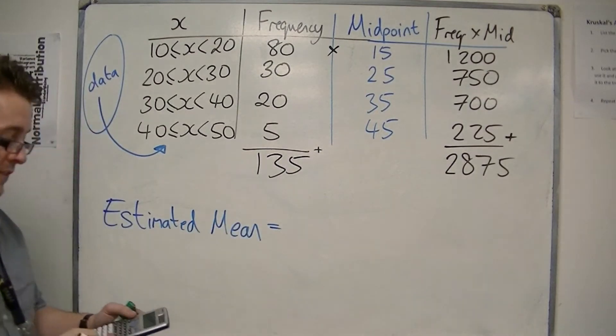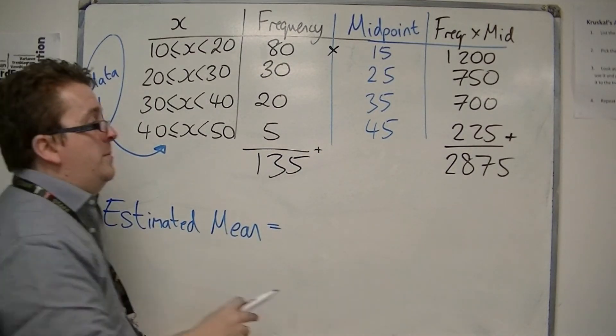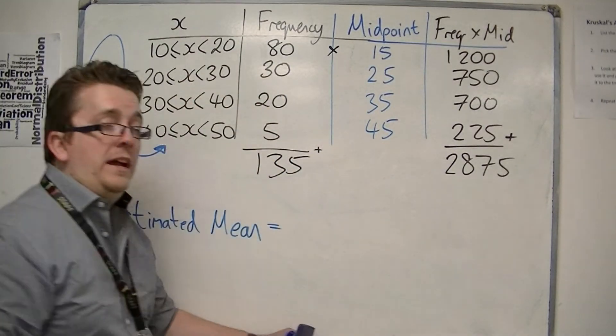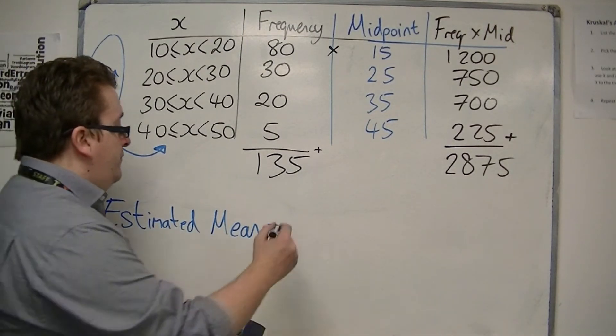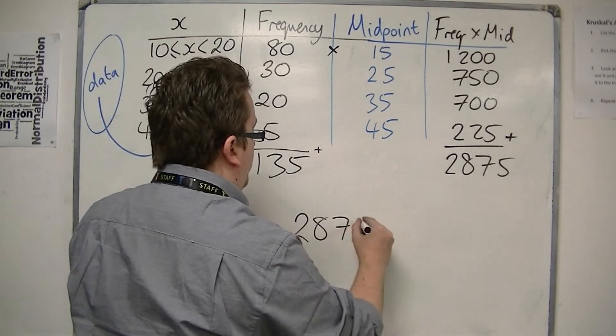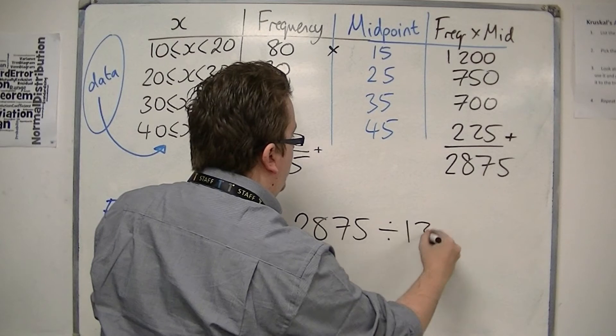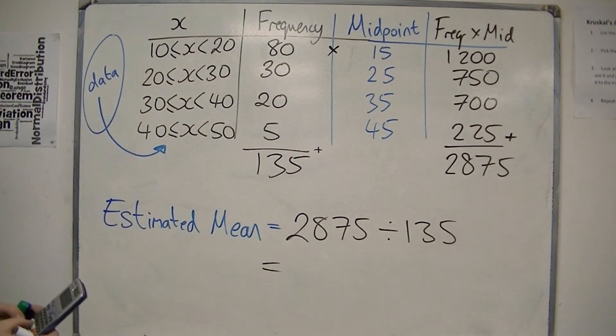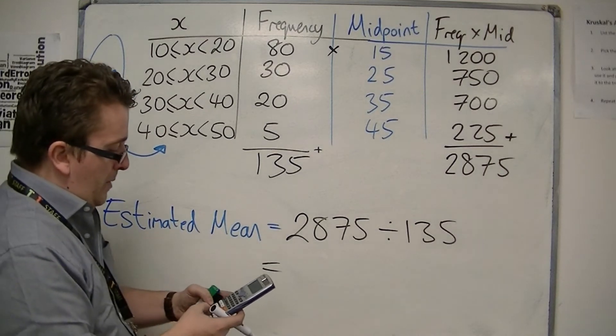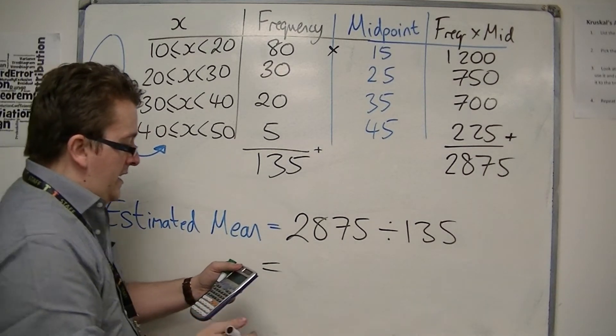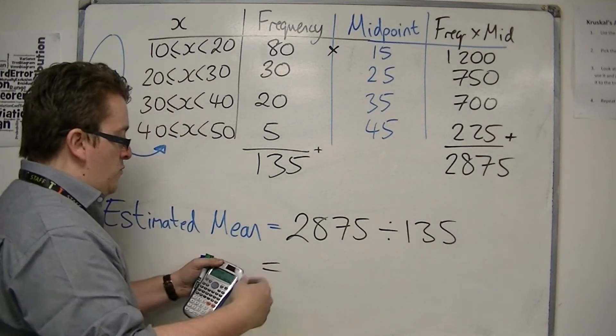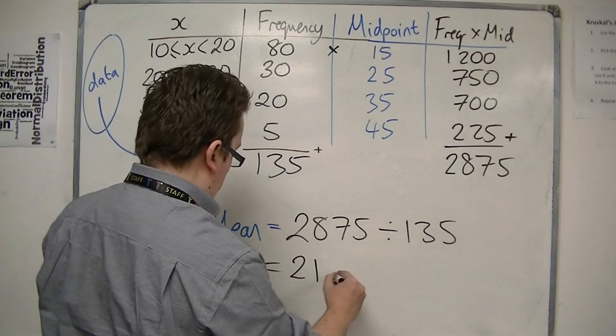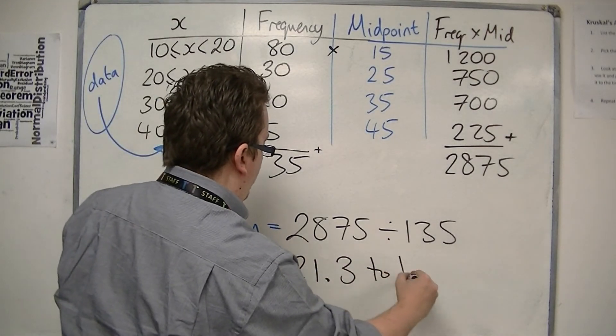So there are 135 bits of data. And my estimate for what they added up to was 2875. So we take what they added up to, we divide by how many there were. 2875 divided by 135 is 21.29. So about 21.3 to one decimal place.